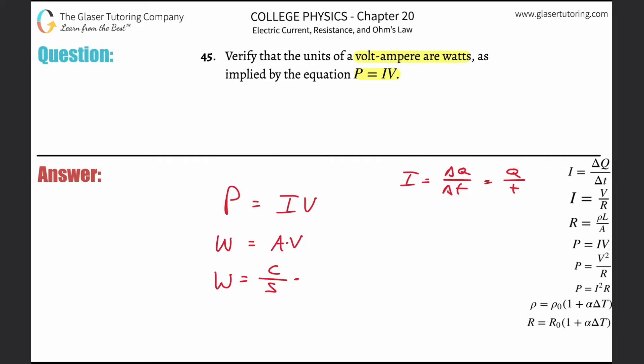Now we multiply that by the voltage. The voltage equals the change in potential energy divided by the charge. So the top unit is energy, that's joules. The bottom unit is charge, that's coulombs.